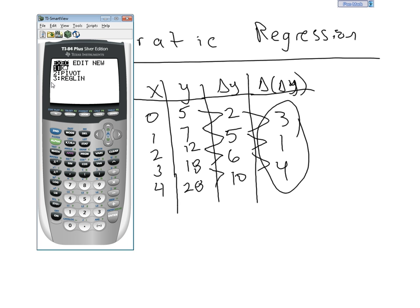You should have reglin in there from class. And what we're going to do is go over to create new. We're going to create a new program. Hit enter. Type in the name. Let's call this quadreg so that we all have the same name.